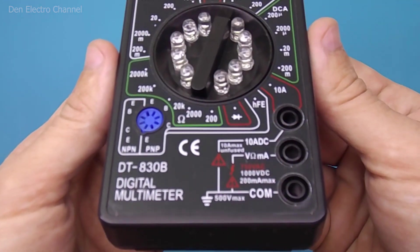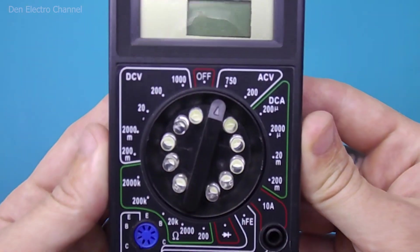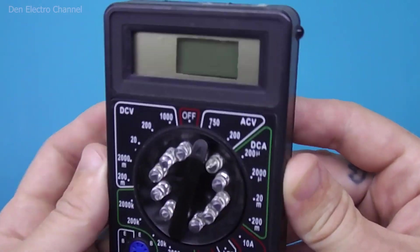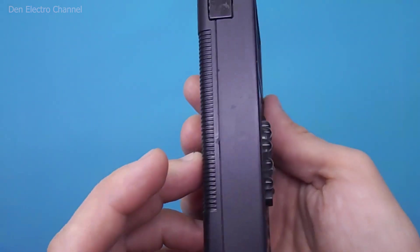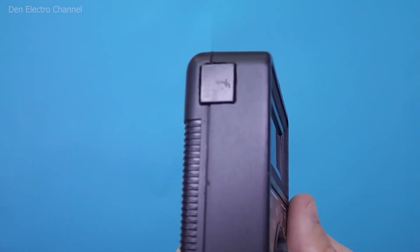Hello everyone, my name is Dennis and you are on the Denelectro channel. Today we will make a power bank for a real radio amateur. As you may have guessed, the case is made of a multimeter.